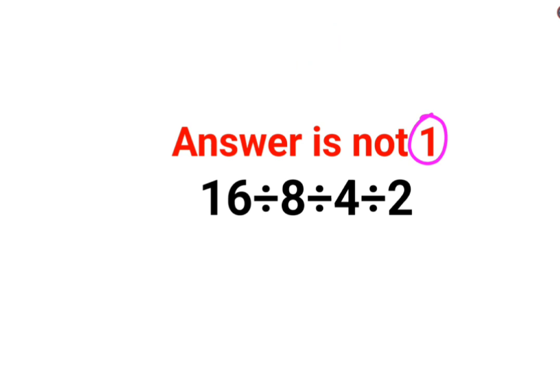let's first understand why people thought that the answer for this one is supposed to be 1. Because 16 divided by 8 is 2, 4 divided by 2 is 2. When you divide them, the answer is 1. But the problem over here is,